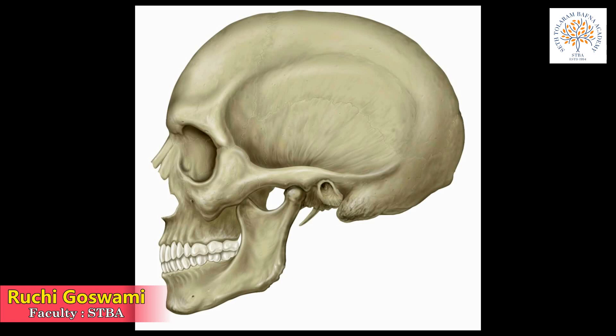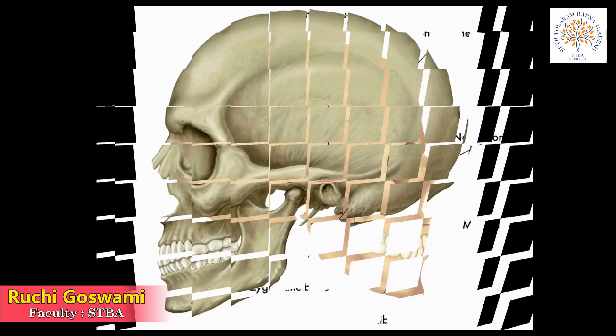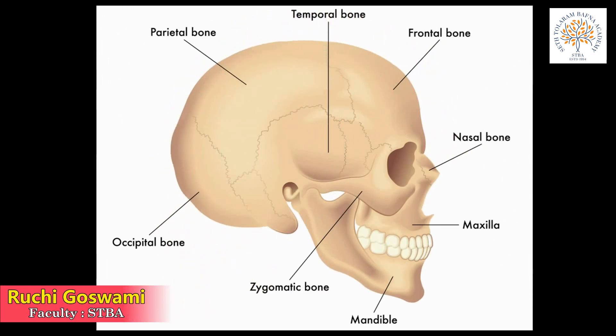The bones of the skull soon join together. The human face is made up of 14 bones; they protect the sense organs. The bones are all joined and therefore immovable — only the lower jaw bone is movable. This enables us to open and close our mouth and therefore to eat and to speak.